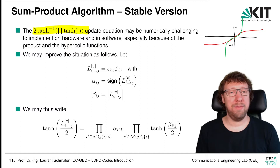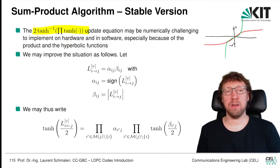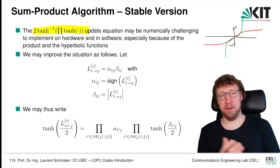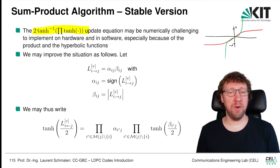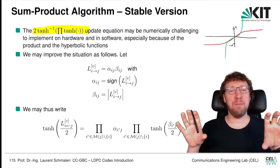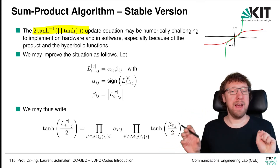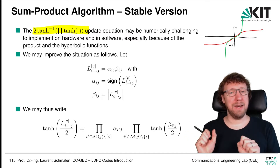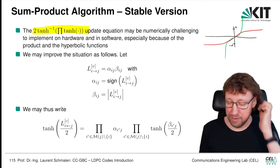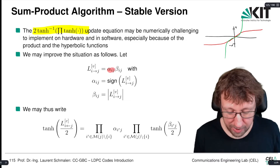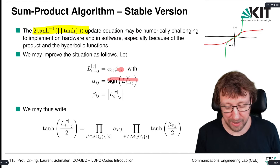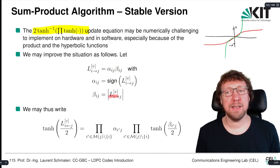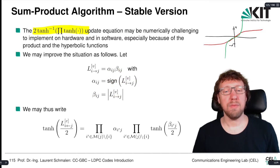How do we get additions from a product? We go to the logarithmic domain. In order to do this, we first take apart our messages and write them as a sign and a magnitude representation. We say that the messages are alpha_ij times beta_ij, where alpha is the sign and beta is the magnitude.